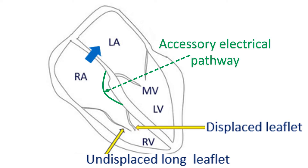The enlarged right atrium and the atrialized right ventricle can be the focus of cardiac arrhythmias, which could be dangerous. In addition, there could be an accessory conduction pathway from the right atrium to the right ventricle. This accessory pathway predisposes to supraventricular tachycardias — a reentrant tachycardia utilizing the accessory pathway and the normal atrioventricular nodal pathway.